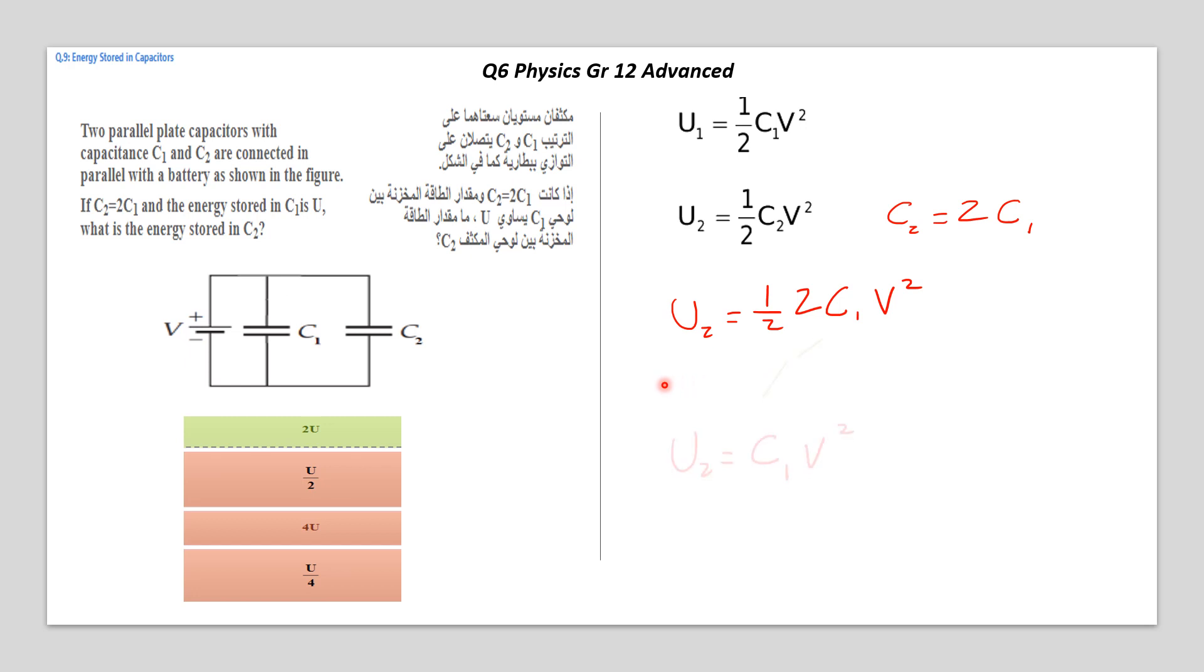So we arrange the equation. We simplify half and two. So the energy stored in the second capacitor, which is U2, is equal now C1V squared.